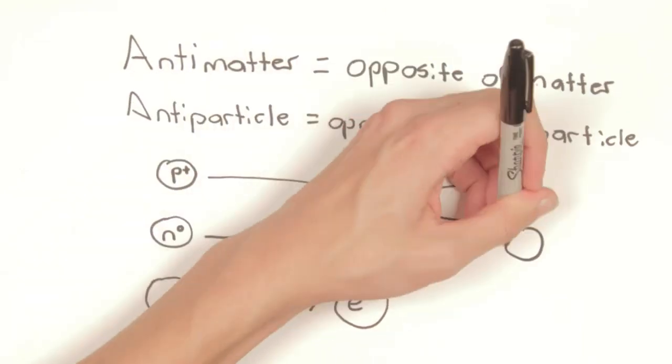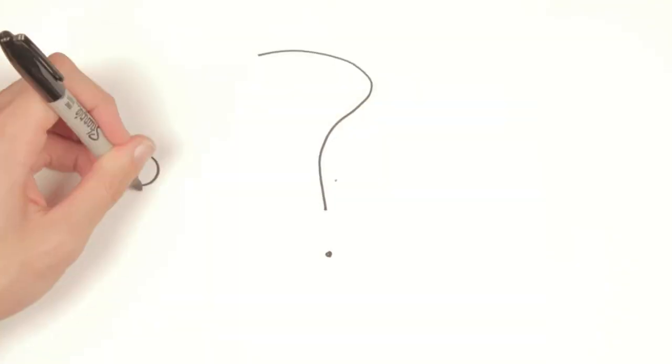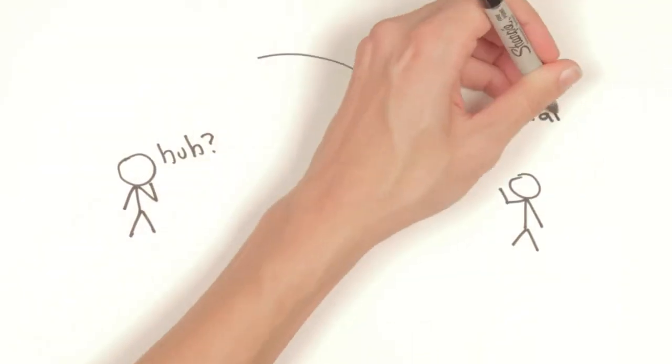Similarly to how particles are made up of quarks, antiparticles are made up of antiquarks. Antiparticles have the same mass as their particle correspondence, but have the opposite charge and spin. This may seem confusing, but in reality, it's quite simple.